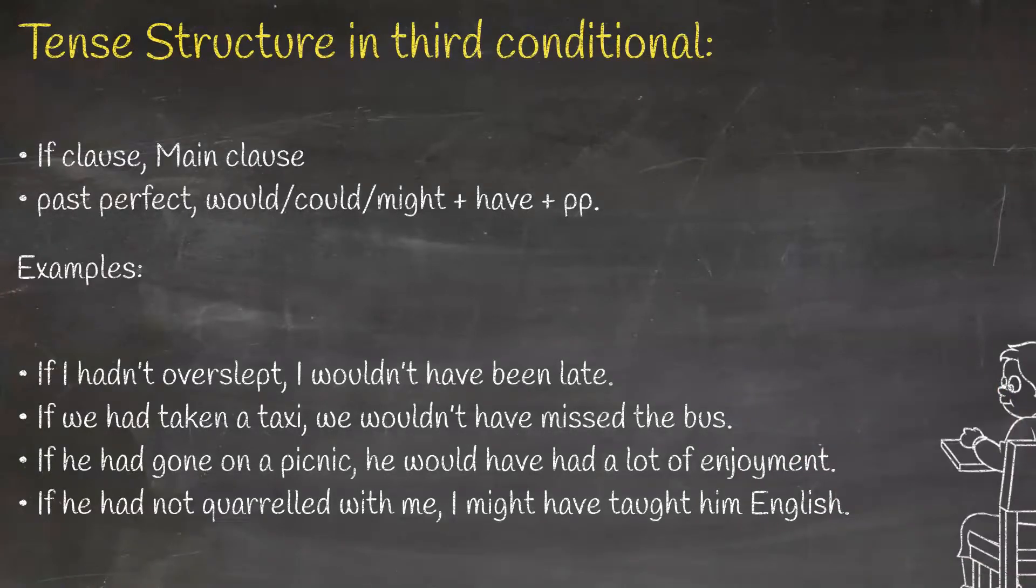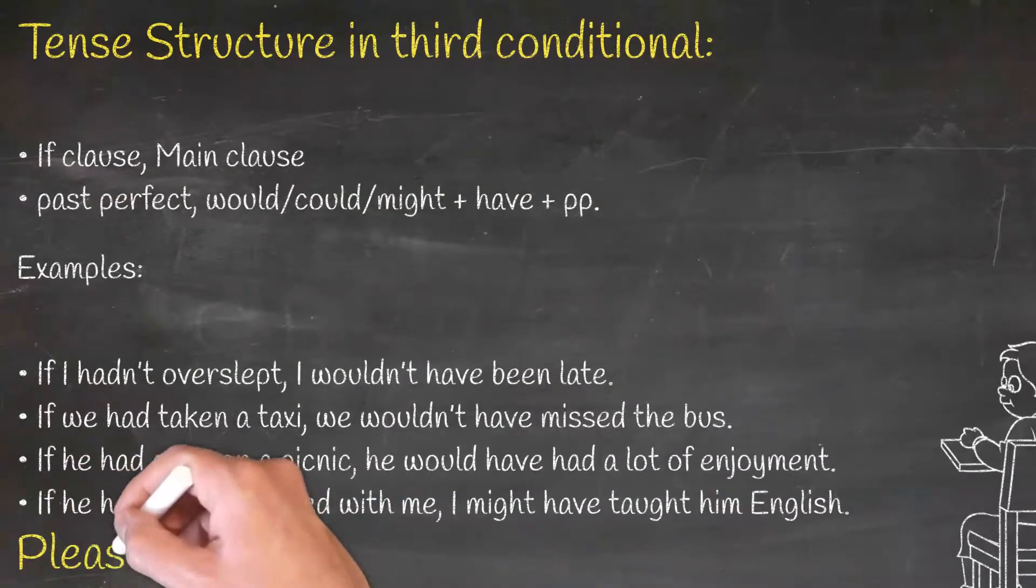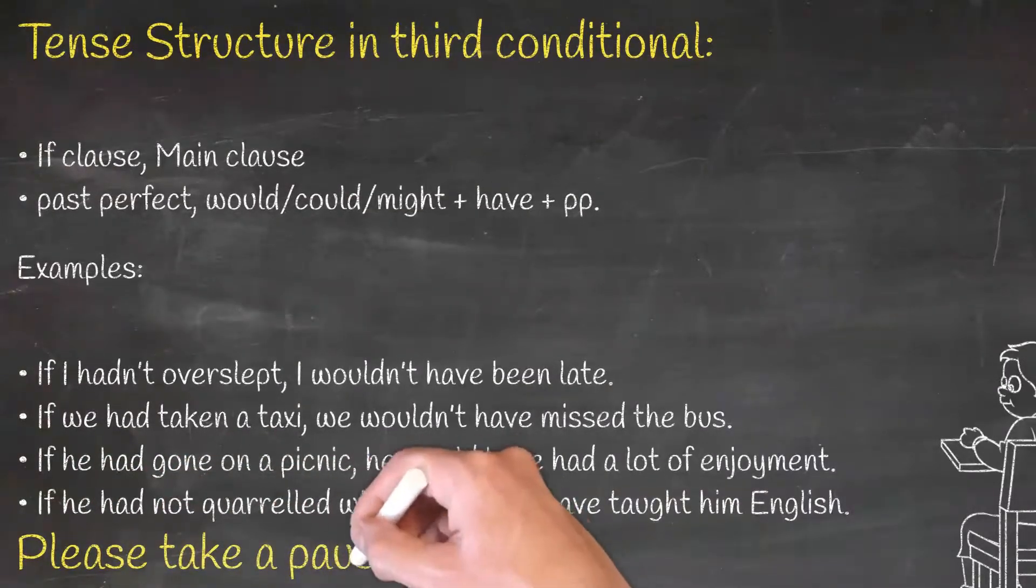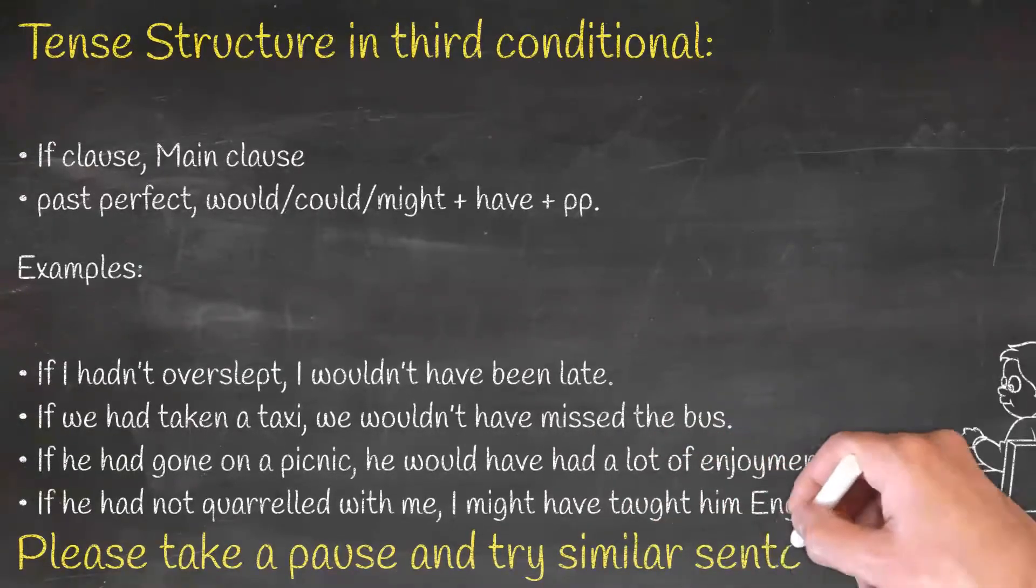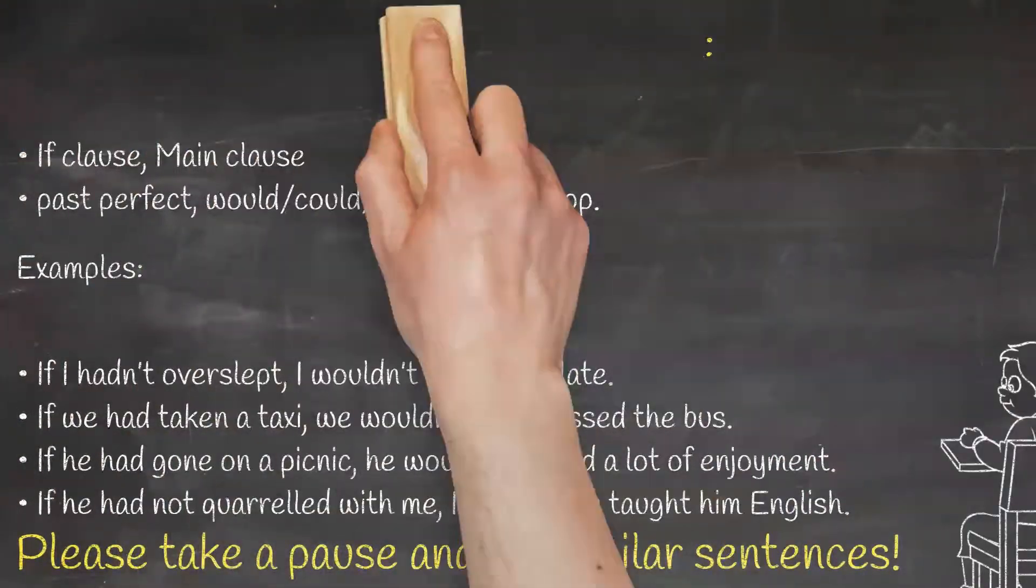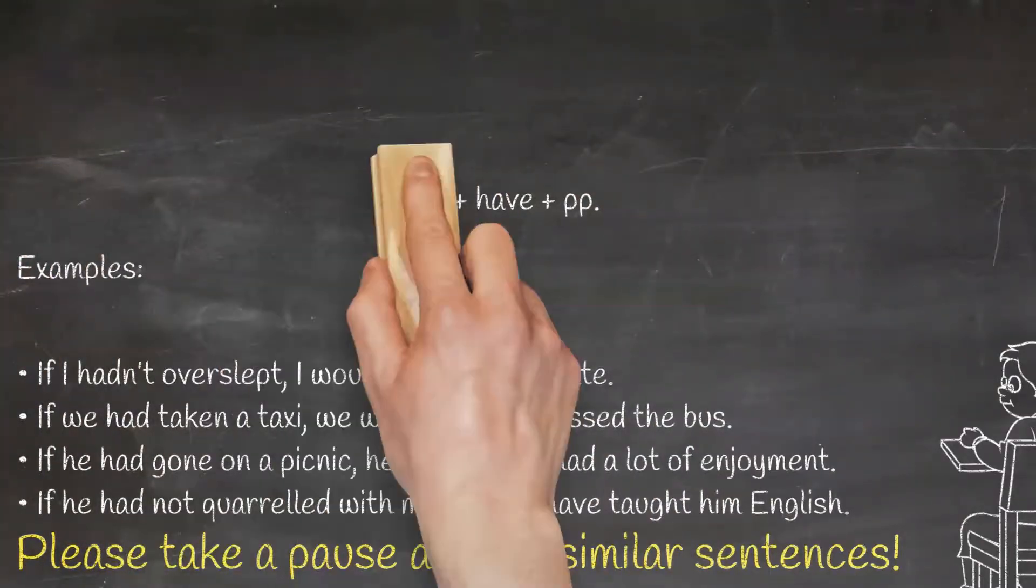If he had not quarreled with me, I might have taught him English. One can form a third conditional structuring the dependent clause with past perfect and the main clause with would or could or might plus have and past participle form of the verb.